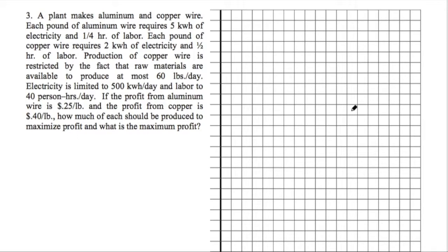A plant makes aluminum and copper wire. Each pound of aluminum wire requires five kilowatt-hours of electricity and one-fourth of an hour of labor. Each pound of copper wire requires two kilowatt-hours of electricity and a half hour of labor. Production of copper wire is restricted by the fact that the raw materials are available to produce at most 60 pounds per day.